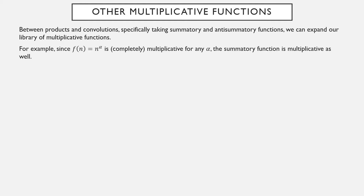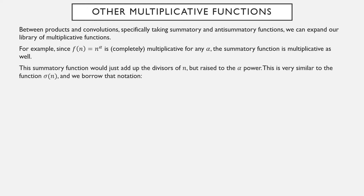Let's consider the function f(n) = n^α. That's a completely multiplicative function — one of the very first ones we introduced in this unit. So therefore its summatory function must be multiplicative. The summatory function goes along the factors of n and adds them up to the α power, since we're plugging those factors into this function raised to the α power and then adding it up. This is very similar to the function σ(n), which adds up the factors of a number, except here we're adding them up to the α power.